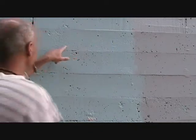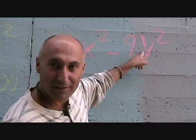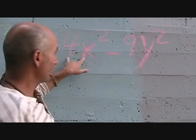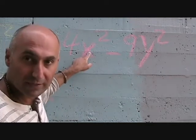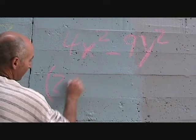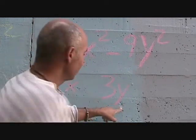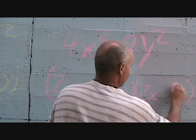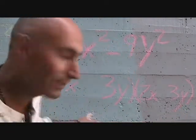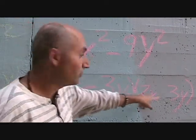You can have variables and numbers mixed together. For example, 4x squared minus 9y squared. It's just the square root of the first one minus the square root of the second one, times the square root of the first one plus the square root of the second. Square root of 4x squared is 2x, square root of 9y squared is 3y. So you get: 2x minus 3y, times 2x plus 3y.